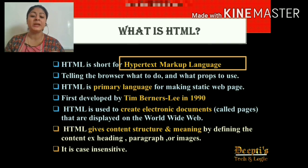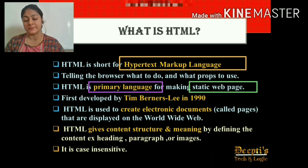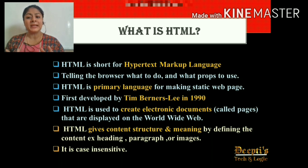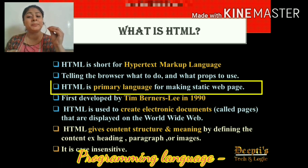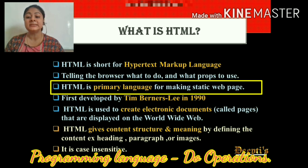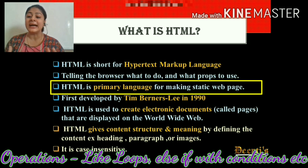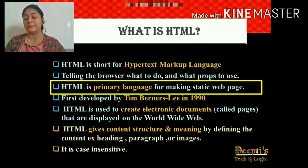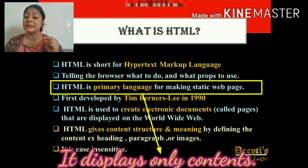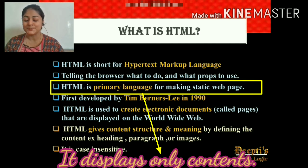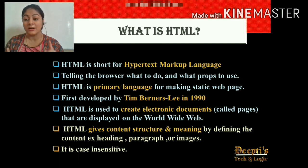HyperText Markup Language is the primary language for making static web pages. You should know what is a primary language and what is a programming language. A programming language means any language that performs operations for us — we give input and it performs operations like in C++, C, or Java, using loops, and gives output. But HTML is used to only display content on web pages, that is why it is called a primary language and not a programming language. So HTML is not at all a programming language.